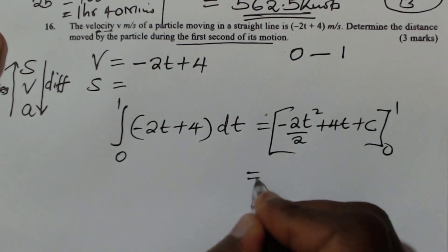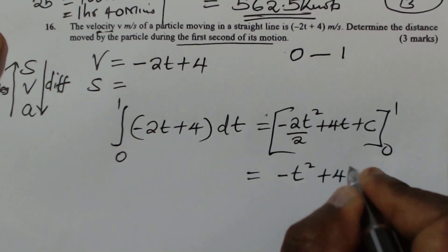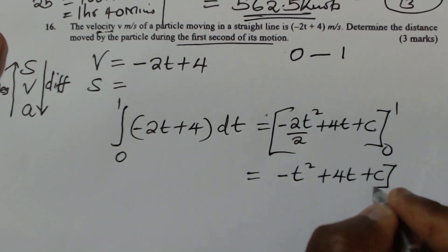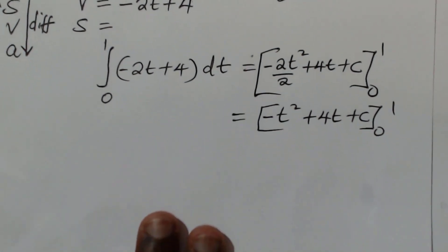This one is from 0 to 1. So this will give negative t squared plus 4t plus c, 0 to 1.